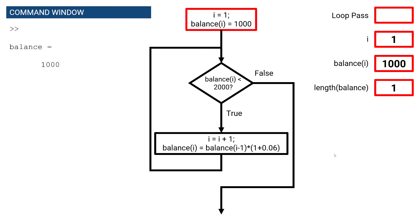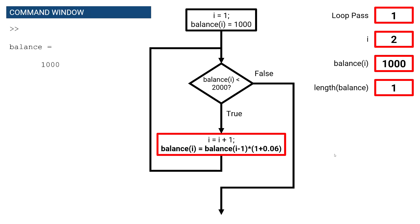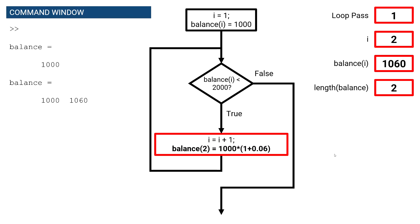Our first step is to initialize our variables — the array index and the initial balance — so the first element inside of the array balance has a value of $1,000. Next, we proceed to evaluate our logical expression, and in this case our balance is less than $2,000, so we proceed to execute our statements, beginning our first loop pass. We increment our array index by one, which enables us to store the new balance inside of the second element of the array.